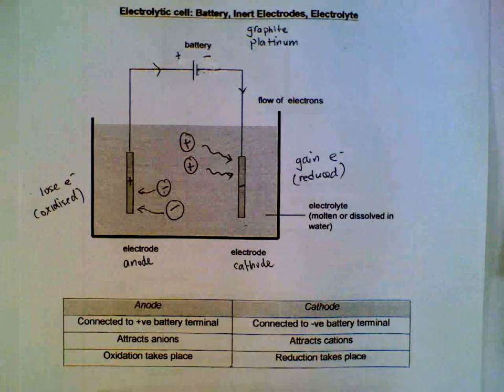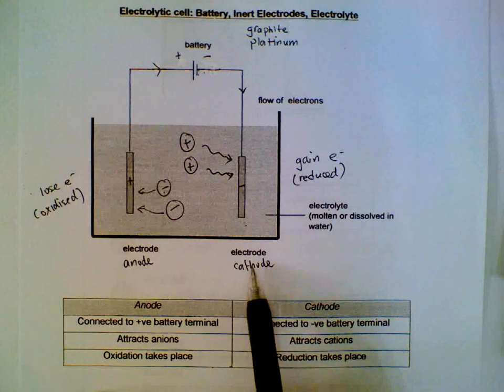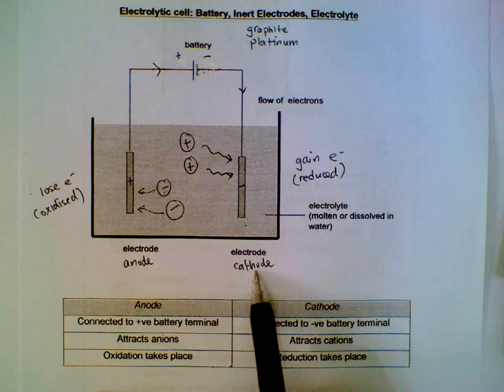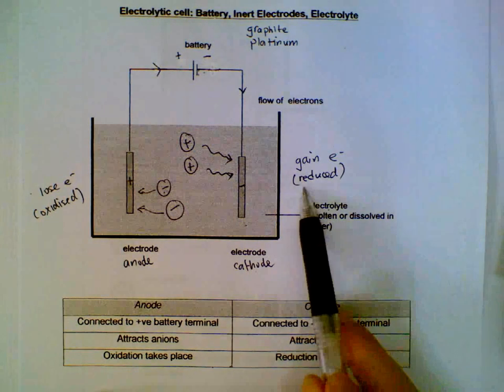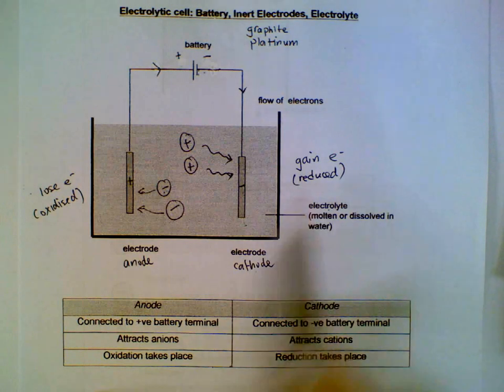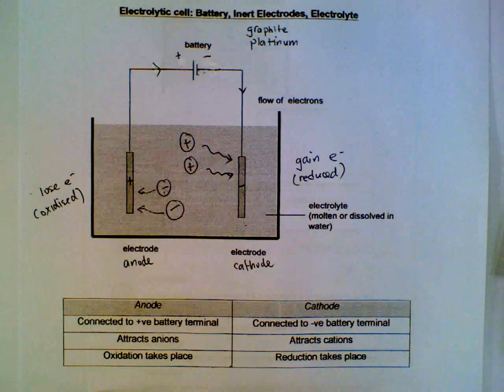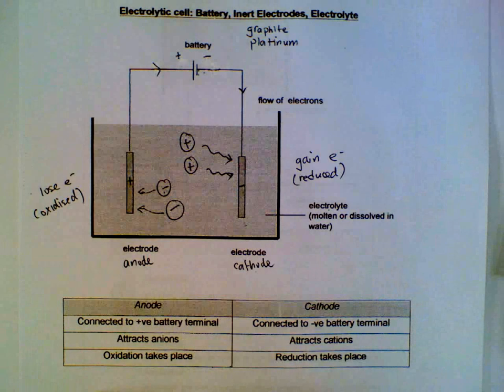But a more scientific way to remember the names: reduction always takes place at the cathode. For an anode, oxidation always takes place at the anode. This will hold true even when we reach the topic of simple cells.